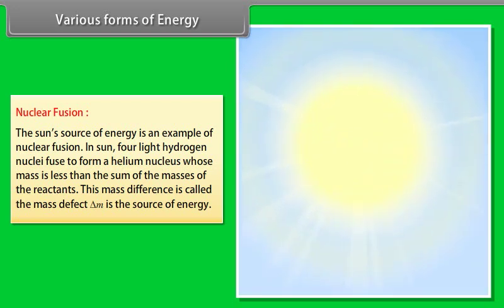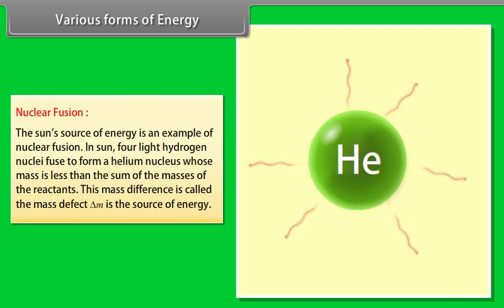Nuclear fusion. The sun's source of energy is an example of nuclear fusion. In sun, four light hydrogen nuclei fuse to form a helium nucleus whose mass is less than the sum of the masses of the reactants. This mass difference is called the mass defect. Δm is the source of energy.